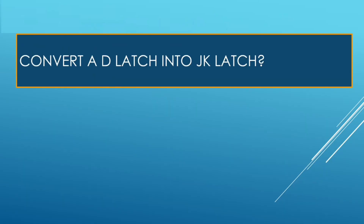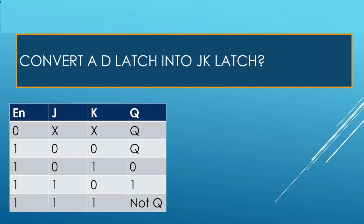Convert D latch into JK latch. As per the truth table of JK latch, it has three inputs: enable, J, and K. When enable is 0, and irrespective of the value of J and K, output Q should be last.